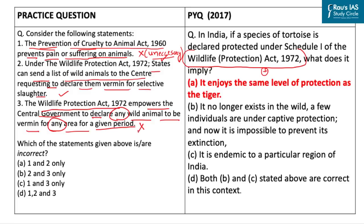This third statement is wrong, because while the central government has the power to declare animals as vermin, it cannot declare all animals as vermin — specifically, animals placed under Schedule 1 of the Wildlife Protection Act cannot be declared vermin by the central government; such an order needs to be passed by Parliament. The question asks which statements are incorrect. Statements 1 and 3 are incorrect, so the correct answer is option C.